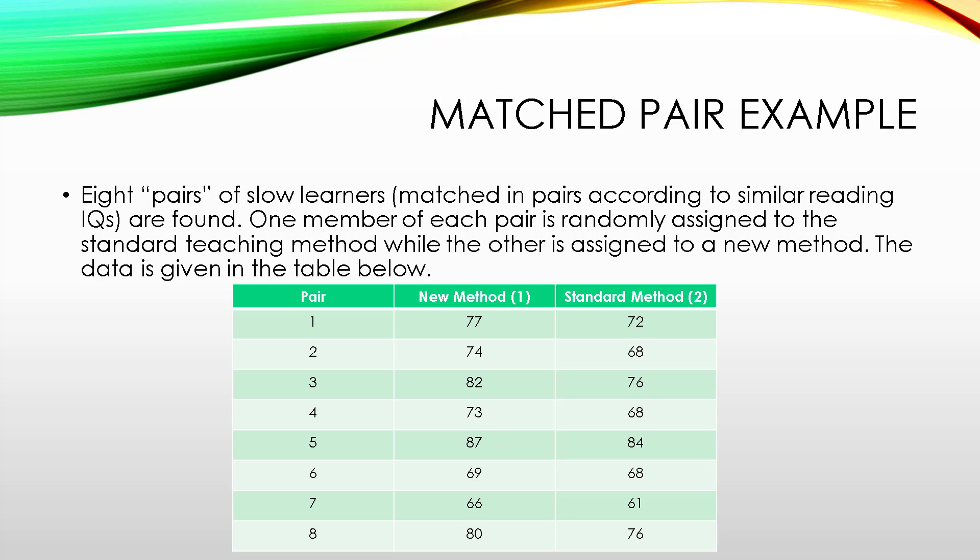There are eight pairs of slow learners, matched in pairs according to similar reading IQs that are found. One member of each pair is randomly assigned to a standard method while the other is assigned to a new method. The data is given below. Even though each pair is a different person, each pair of learners is paired according to their IQs and they're paired before the data is gathered. So, a matched pairs design is appropriate in this example.